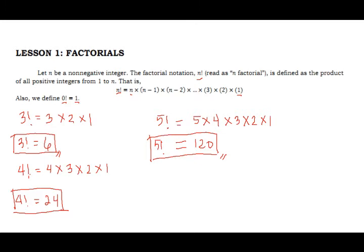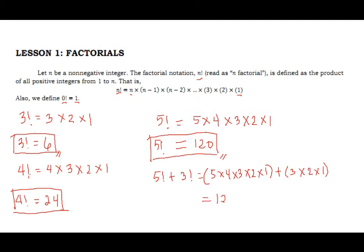What if the problem is 5 factorial plus 3 factorial? We don't just add 5 and 3. We need to apply the factorial notation process first before adding. So 5 factorial is 5×4×3×2×1 and 3 factorial is 3×2×1. We know 5 factorial is 120 and 3 factorial is 6, so 5! + 3! equals 126.